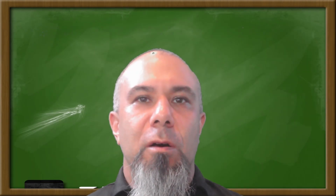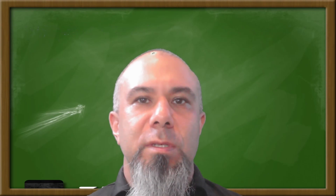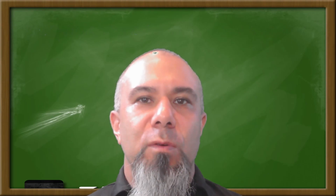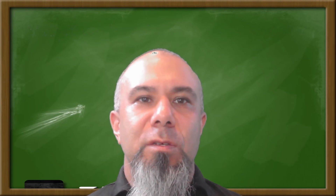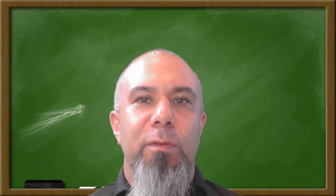In China, all the years have an animal symbol. There are twelve symbols. For example, the year of the rabbit was from 1999 to 2000. The year of the sheep was from 2003 to 2004.